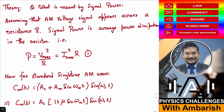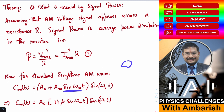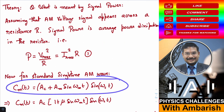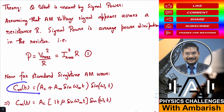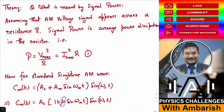Let me present the question and explain all the theory related to transmitter power, transmitter current, and transmission efficiency. First, what is meant by signal power? Assuming the AM voltage signal appears across a resistance R, signal power is simply the average power dissipation in the resistor — I-RMS squared times R, or V-RMS squared divided by R for a purely resistive load. For a standard single-tone AM wave, I just have one frequency in the message signal, omega-M. The modulated wave, copied from NCERT, is AC into 1 plus mu sine omega-M times T, times sine omega-C times T, where mu is the modulation index.